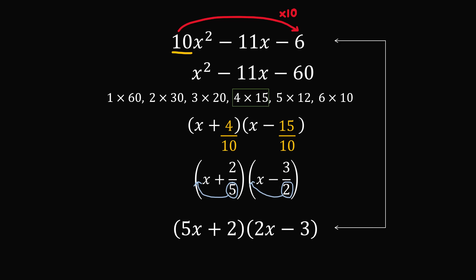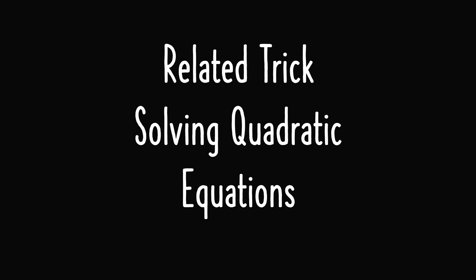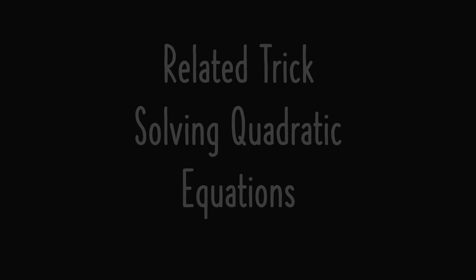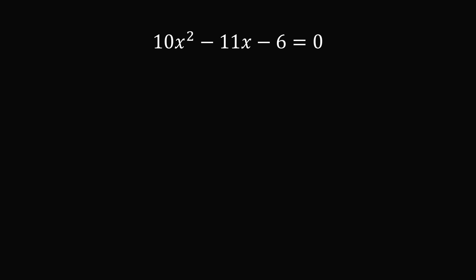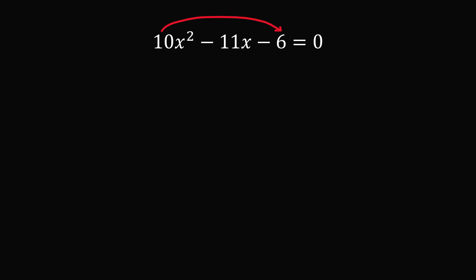Amazing! Now let me present a related trick which can be used to solve quadratic equations. Instead of factoring the trinomial of the last example, let's set it equal to 0 and solve for the roots. The method is sometimes taught as slide and divide. We start by sliding the coefficient on x squared — we take this factor of 10 and multiply it by the constant term of 6. So we now have the related quadratic x squared minus 11x minus 60 equals 0.